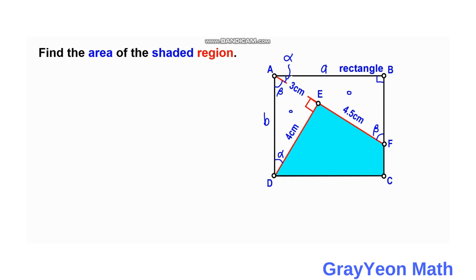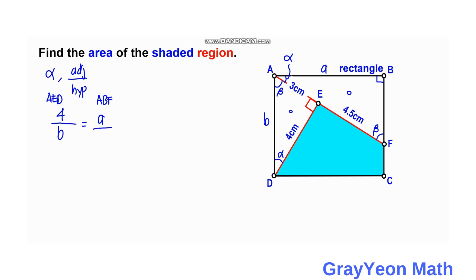With respect to angle alpha, we use adjacent over hypotenuse. For triangle AED, the adjacent to alpha is 4 and the hypotenuse is B. For the other triangle ABF, with respect to alpha, the adjacent is A and the hypotenuse is 3 plus 4.5, which equals 7.5.